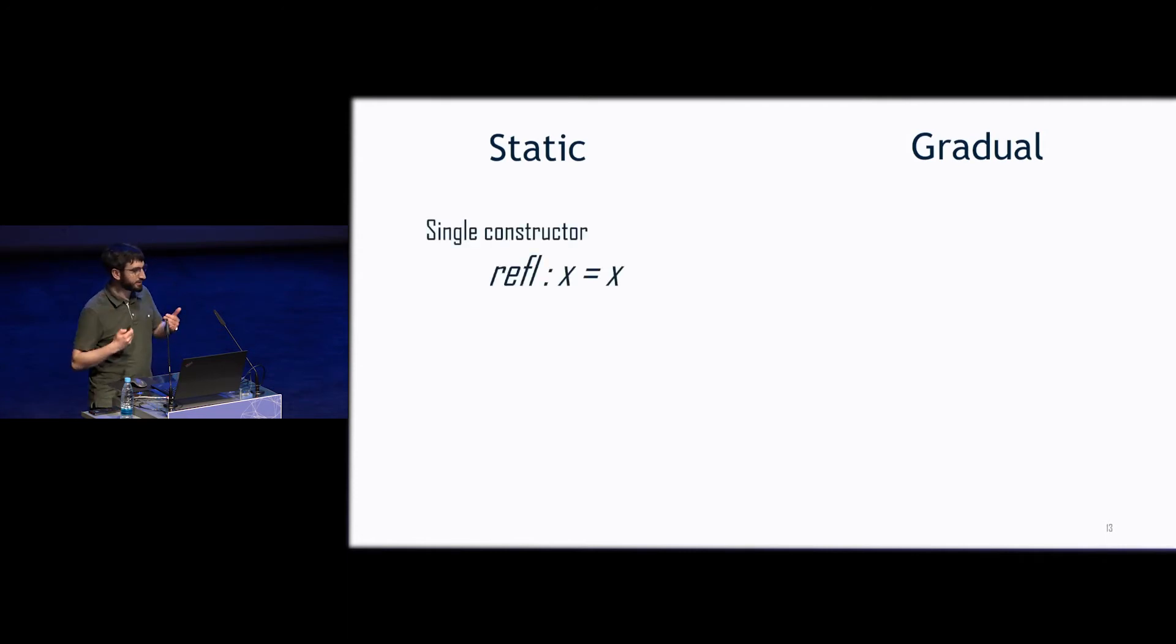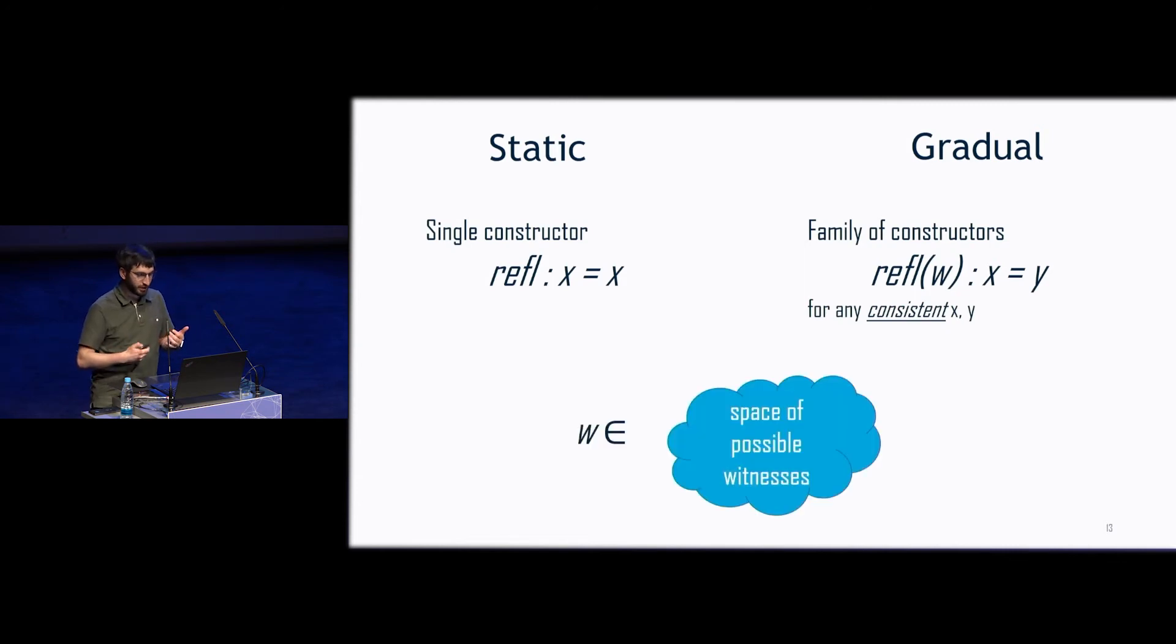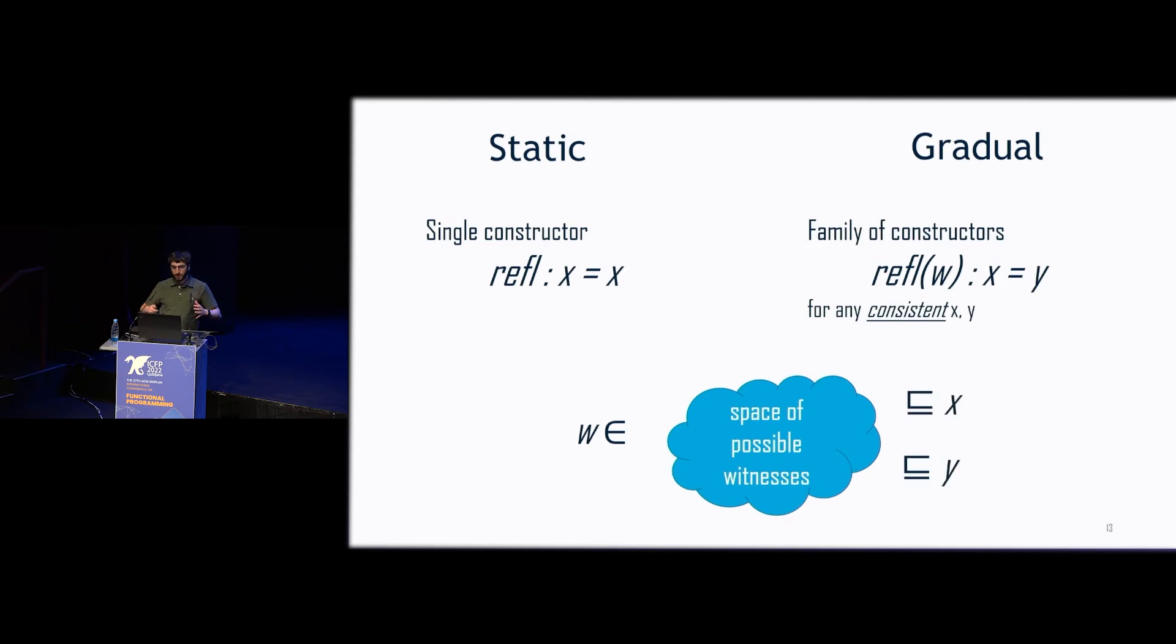So in a static-dependently typed language, you prove an equality with refl. And refl is the canonical proof that for any x you give it, that x is equal to itself. Our gradual version looks like this. We have refl that can prove that any x and y are equal to each other, provided that you give a witness w. And that witness is a witness of consistency. So there's an entire space of possible witnesses. And that space is all of the terms that are as precise as both x and y. And if there's something that is as precise as both of them, then the information that they have is consistent with each other. And we say that we can equate them modulo that imprecision.